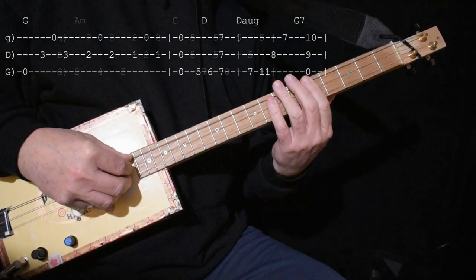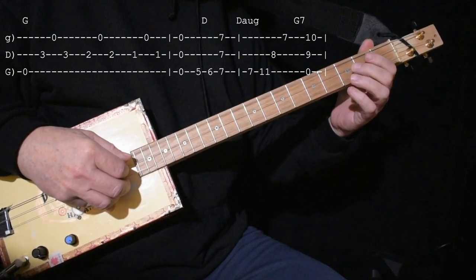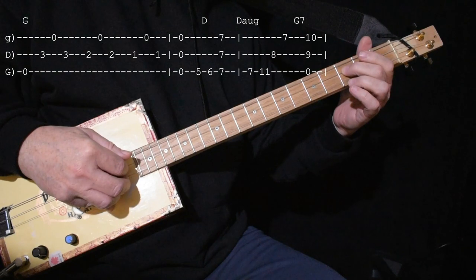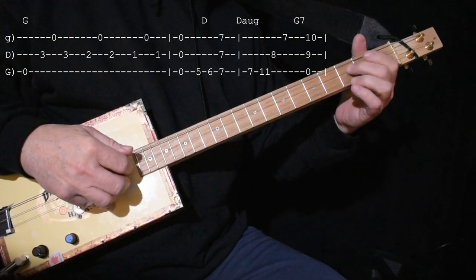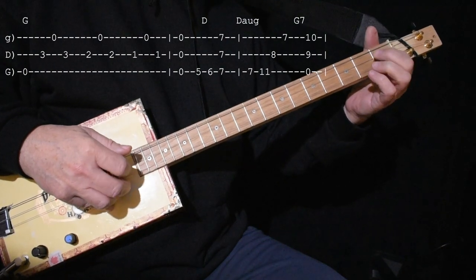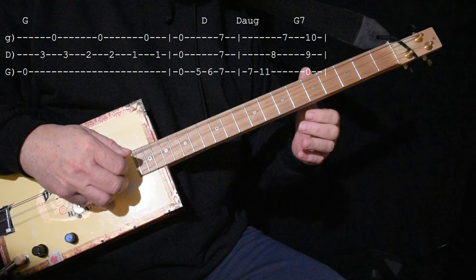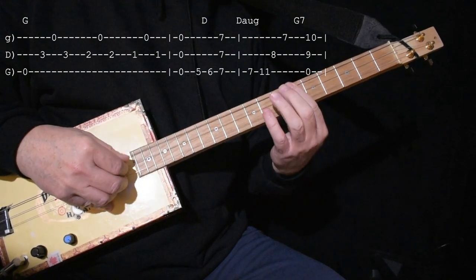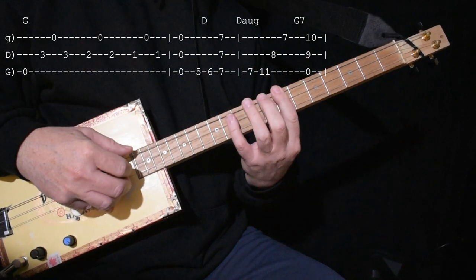And then we're into a standard turnaround. You probably already know. Open G, low string. Then 3 on the middle and a 0 on the high string. So 3, 0, 3. 2, 0, 2. 1, 0, 1. G chord. Run up to D. You can play the chord here and you can play the augmented run.